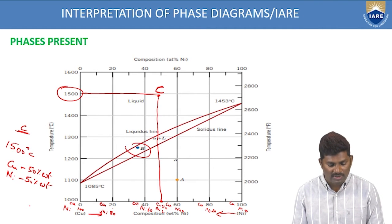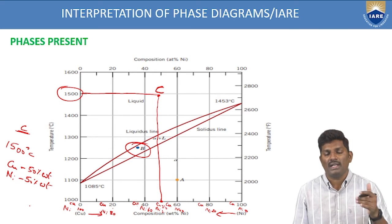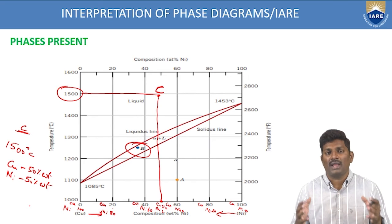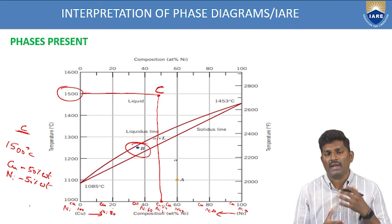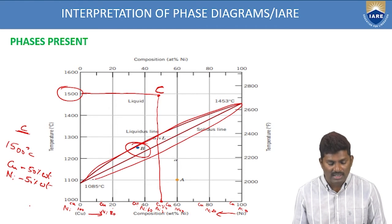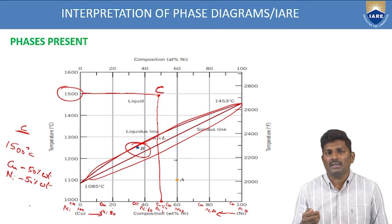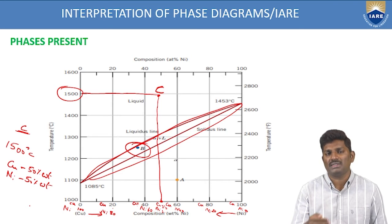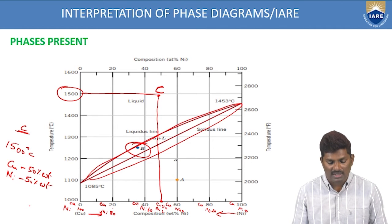Point B lies in between the solid and liquid phases. Since this point B is in the two-phase region (both liquid and solid), it is very difficult to find out the composition. To find compositions and temperatures for a point lying in the two-phase region, we use the tie line method. With the tie line method it is somewhat clear to find out the compositions and temperatures, which we will see in the coming slides.